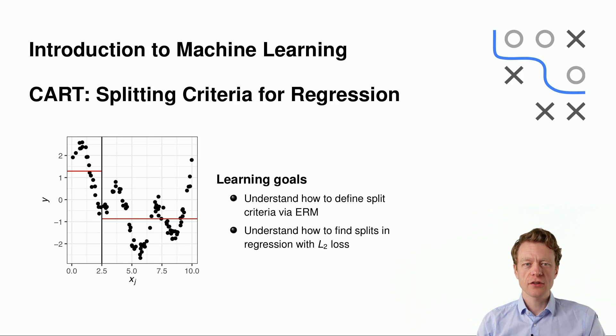At the end, you should understand how to define split criteria via empirical risk minimization, and you should understand how to find splits in regression when we choose the L2 loss.